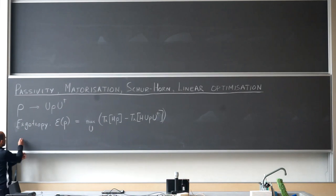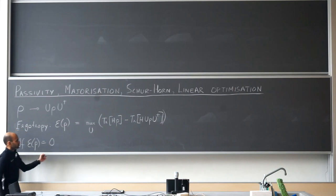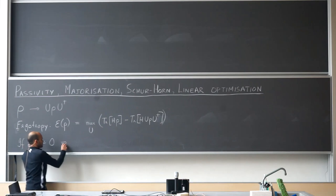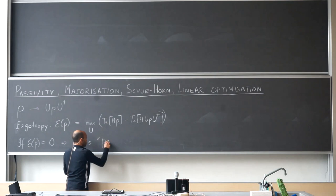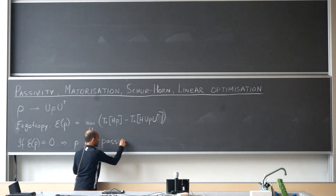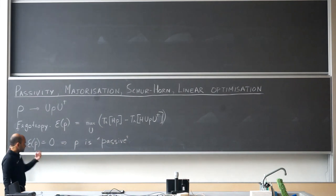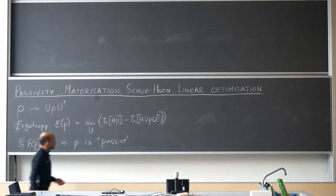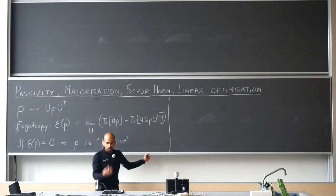If this is zero — meaning that no matter what unitary I do, I cannot lower the energy of the state, I can only put in energy — then we say that rho is passive. A passive state is simply one on which no matter what unitary operation I do, I cannot extract energy from it; I will only end up putting energy into it.